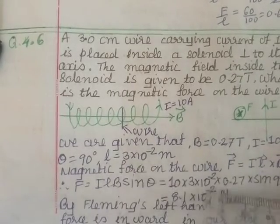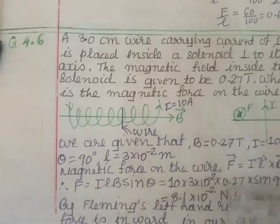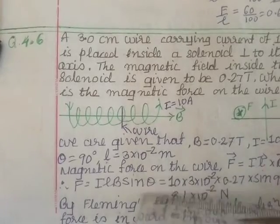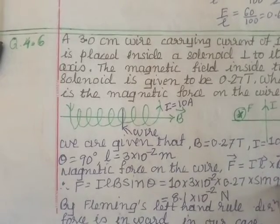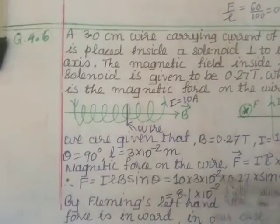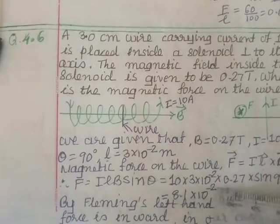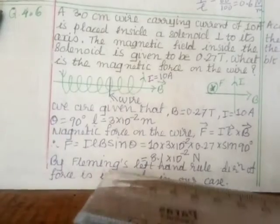Theta is 90. Simplify, you get 8.1 into 10 to the power minus 2 Newton. Now we have to give the direction.